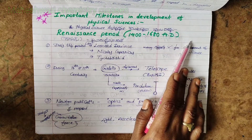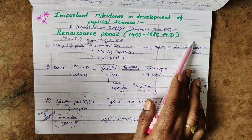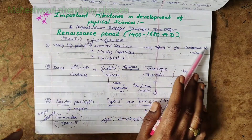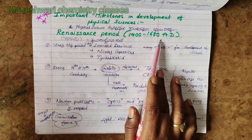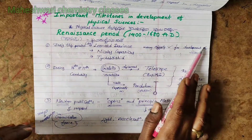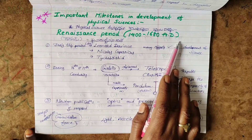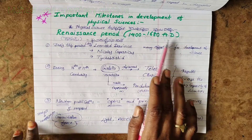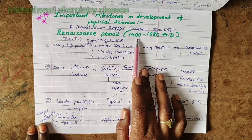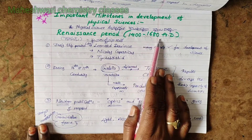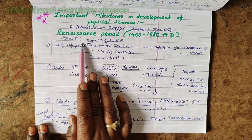There are two parts of time: BC — Before Christ — and AD — Anno Domini. In the time-calculating period, 1400 to 1680 is the Renaissance period.